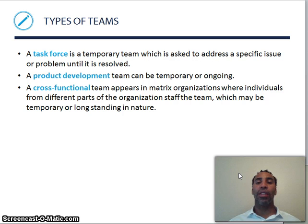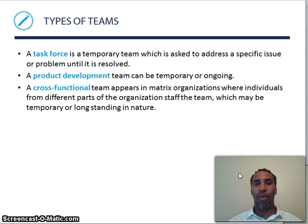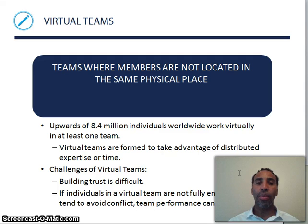A product development team can be temporary or ongoing. A cross-functional team appears in a matrix organization where individuals from different parts of the organization staff the team, which may be temporary or long-standing in nature. In matrix organizations, people often have more than one manager — you report to your regular operations manager and also to a manager in charge of a specific project.